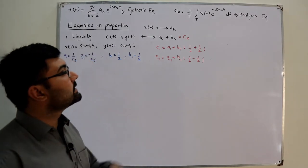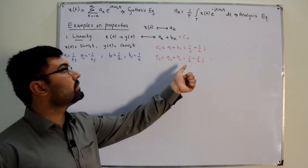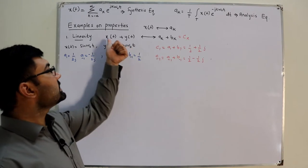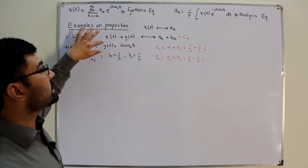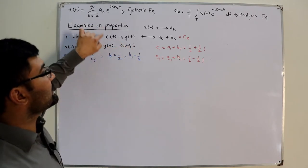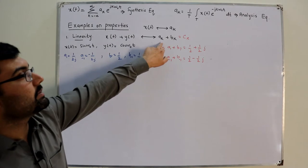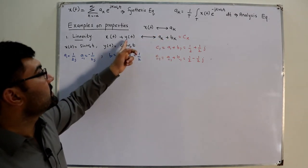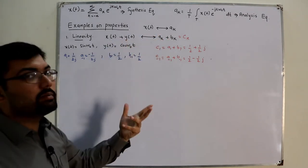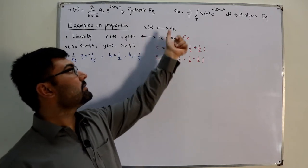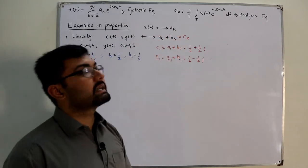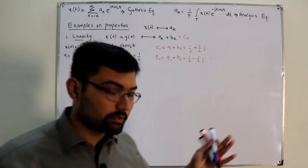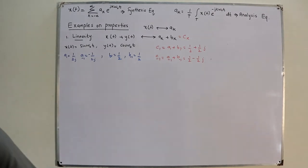You add the corresponding coefficients: k=1 with k=1, and k=-1 with k=-1. If you have a multiplication factor — say x(t) is multiplied by capital A — you multiply each ak by that capital A. Similarly, if y(t) is multiplied by capital B, then bk is multiplied by capital B. That's property number one.